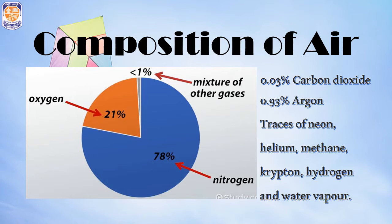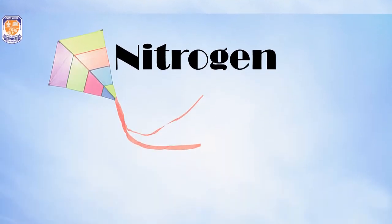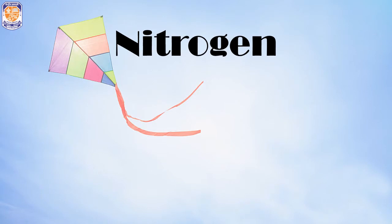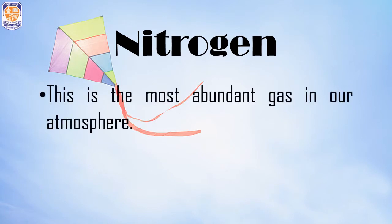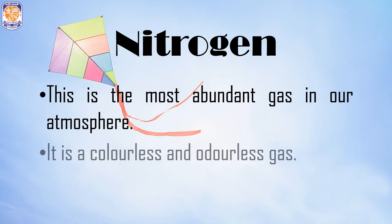Starting with nitrogen — it is the most abundant gas present in our atmosphere. The amount of nitrogen in the air is 78%. It is a colorless and odorless gas, meaning it does not have any color or a characteristic smell of its own.